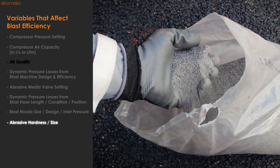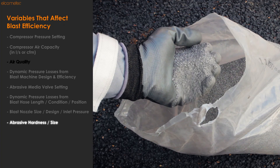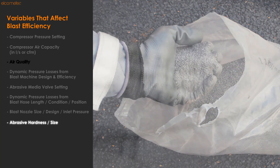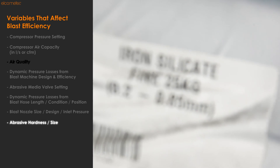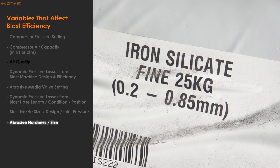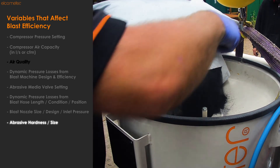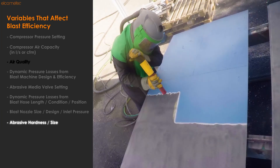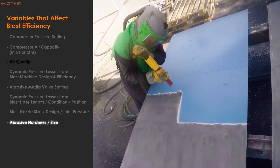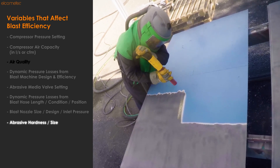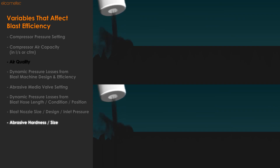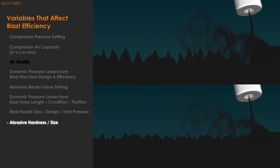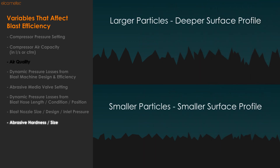When it comes to the abrasive you're using, your choice of abrasive will most likely be defined by what it is you're blasting and what abrasive is available to you. Typically, the harder the abrasive, the more effective it will be at removing rust and previous coatings, and efficiently creating a surface profile. When it comes to the size of the abrasive particles, it's typically accepted that larger particles create deep profiles, and smaller particles create smaller profiles.